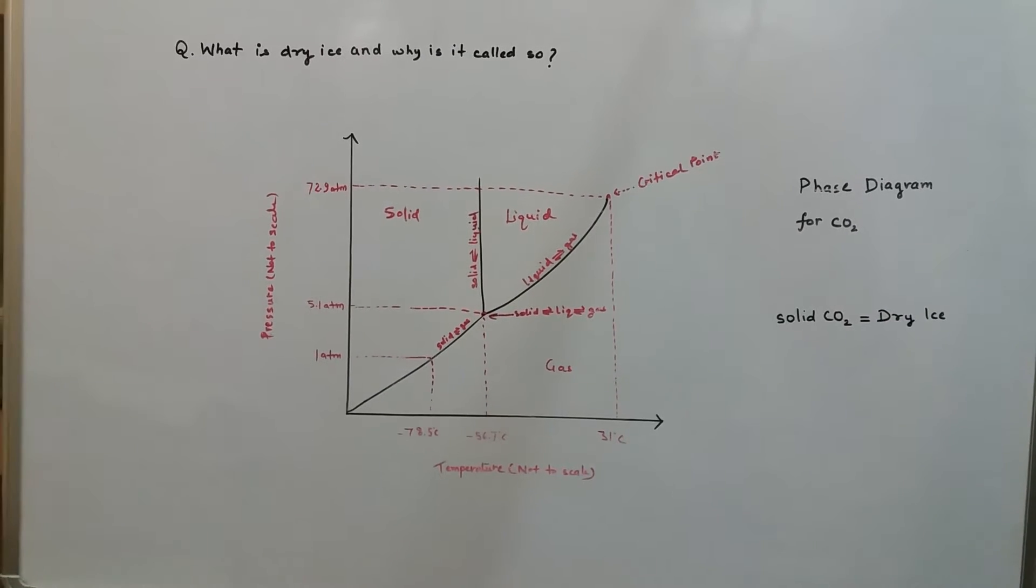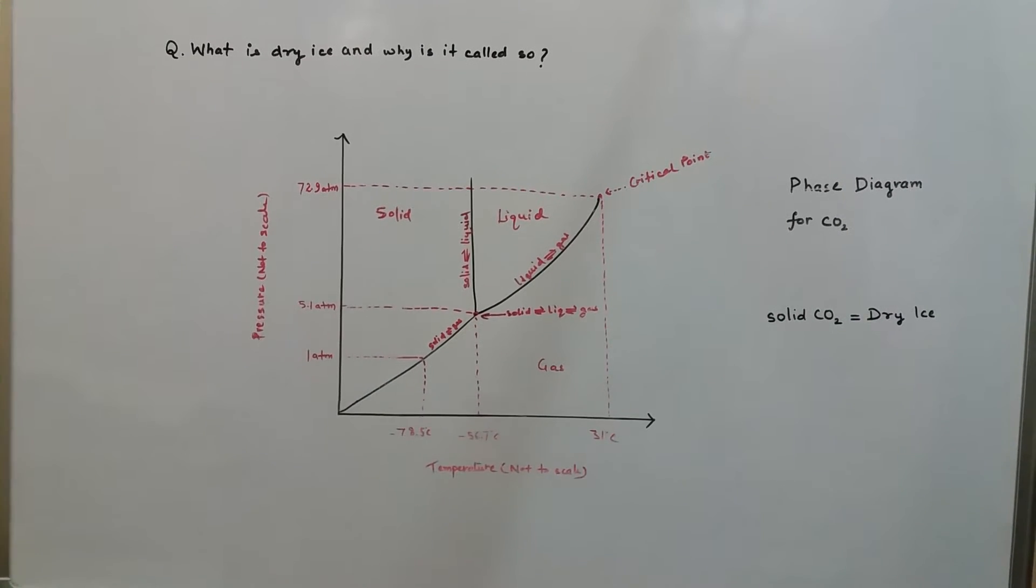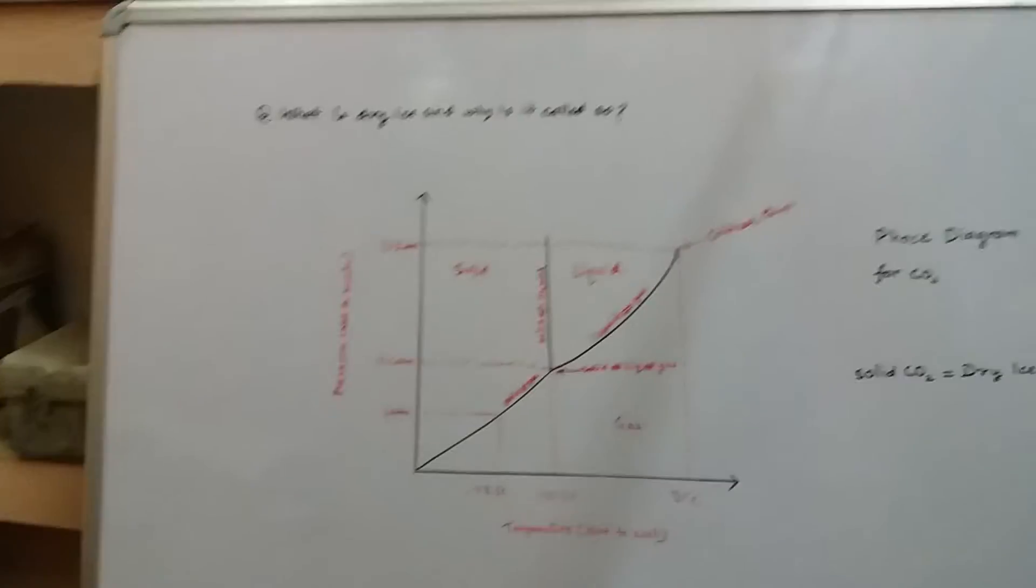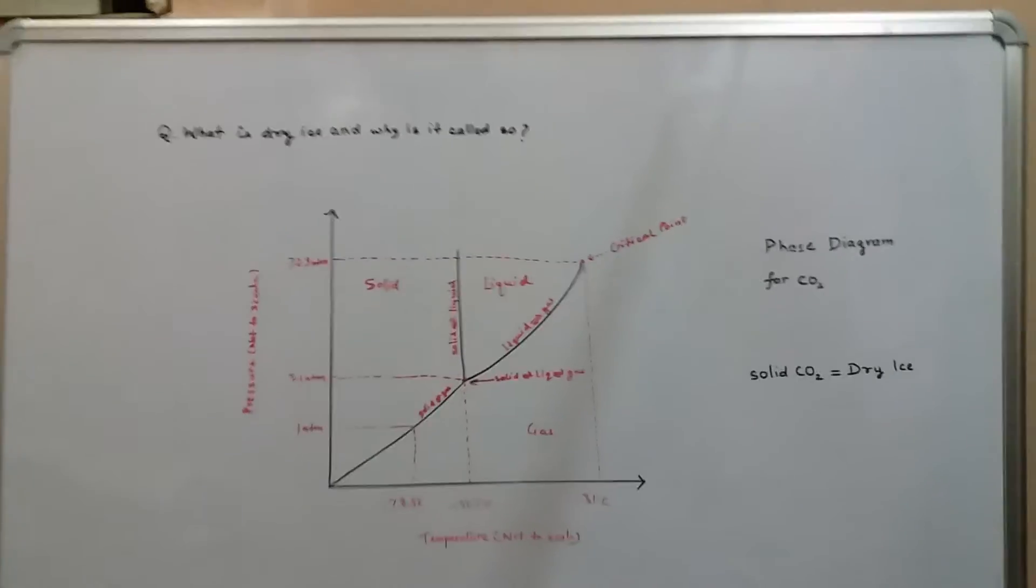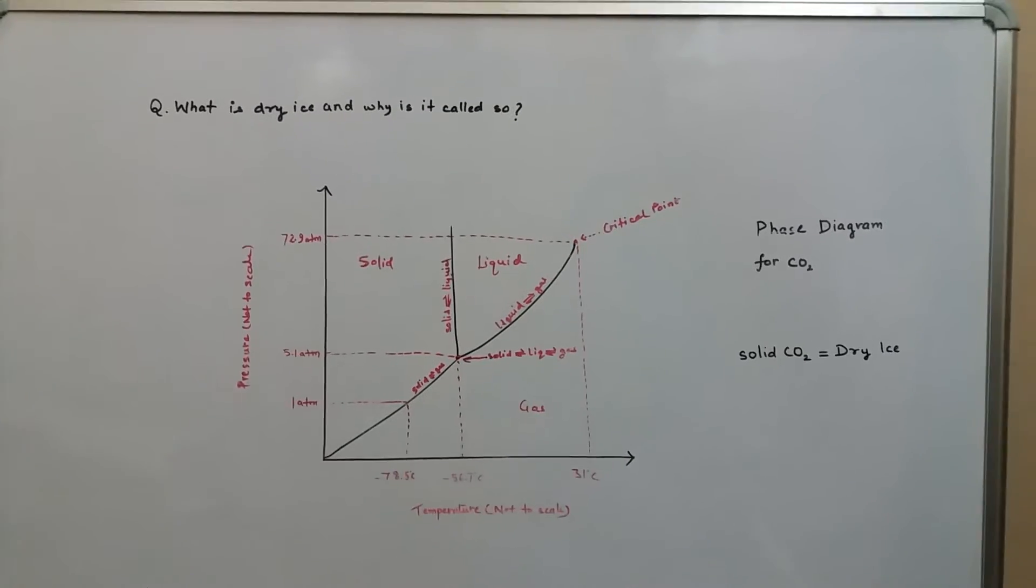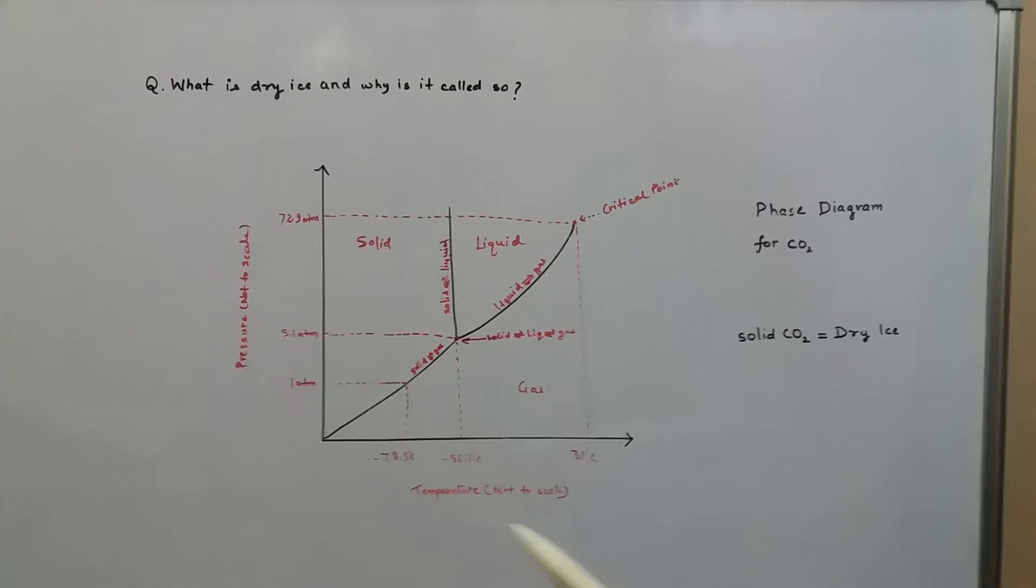Hello guys, welcome to my channel. Today we'll understand what dry ice is. Dry ice is nothing but solid carbon dioxide. So why is solid carbon dioxide called dry ice? To explain that, here we have the phase diagram for carbon dioxide.